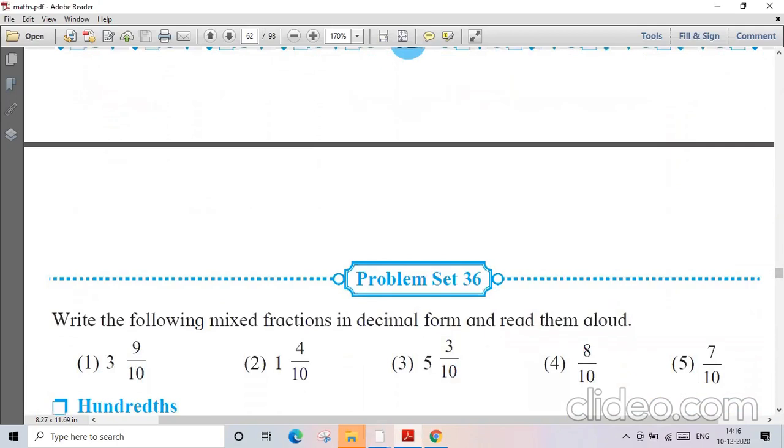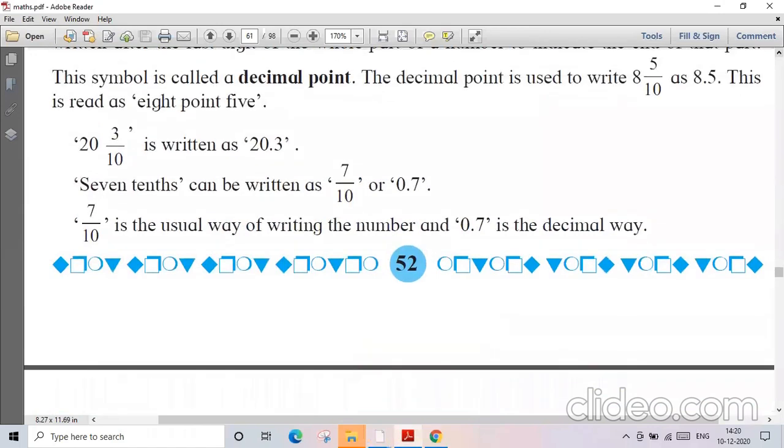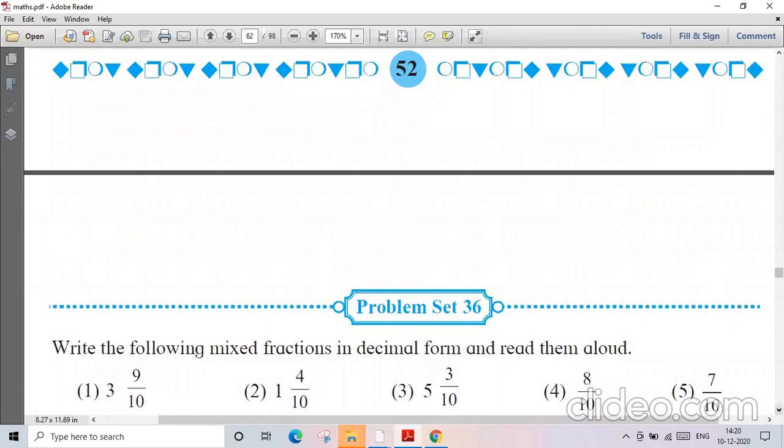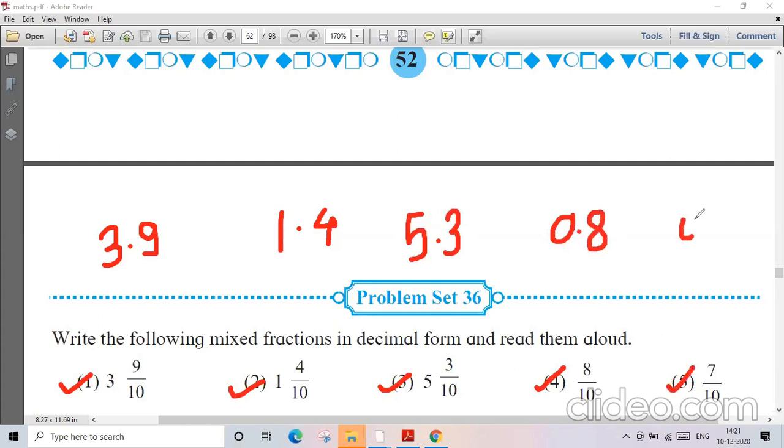We will be solving Problem Set 36. Question number one: 3 and 9 upon 10 can be written as 3.9. Second one: 1.4. Third one will be 5.3. Fourth one will be 0.8, and the last one will be 0.7.